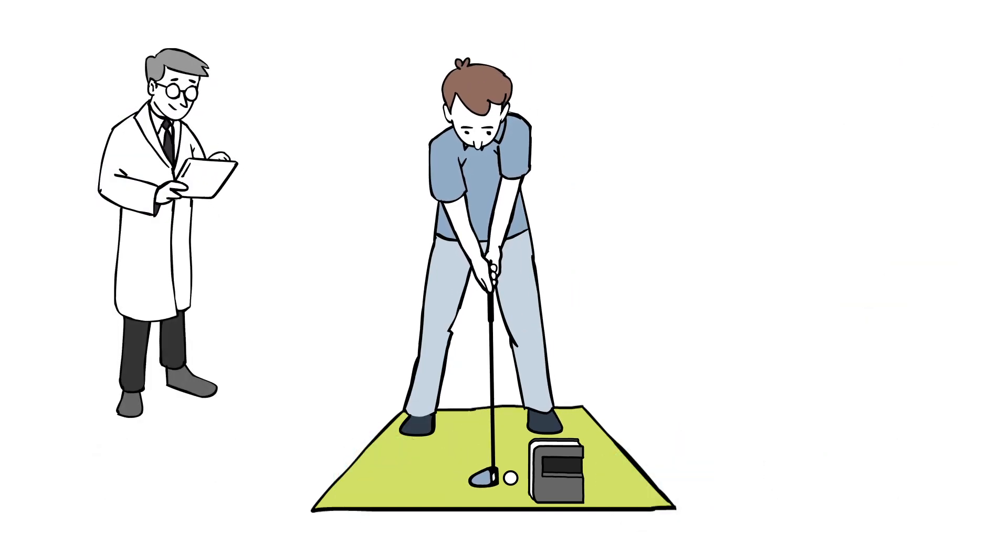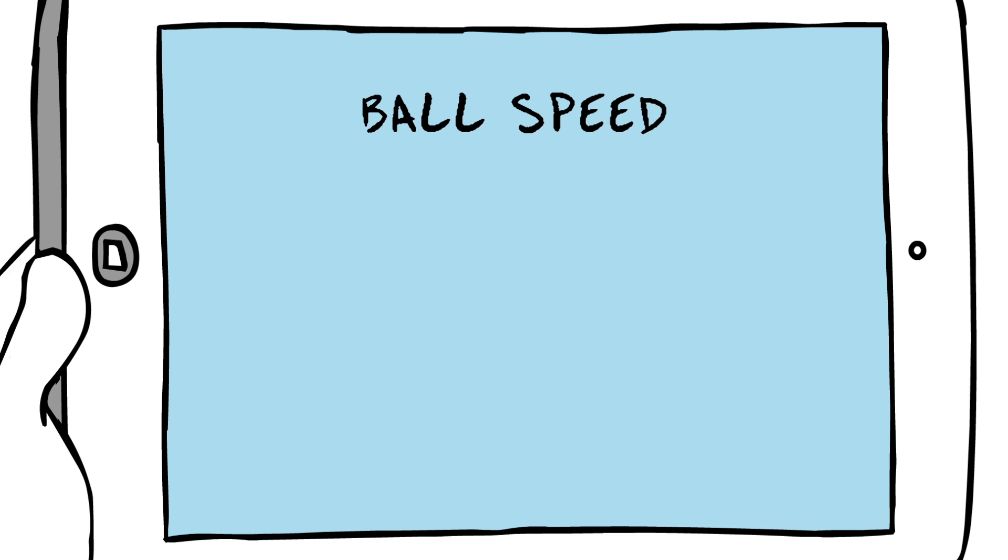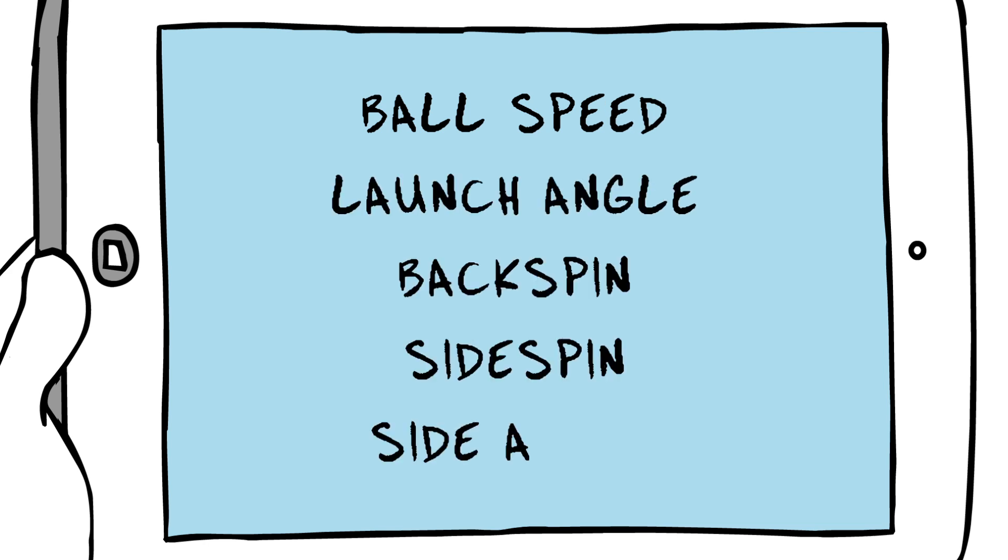With SkyTrack's accurate and reliable golf ball measurements, the following data parameters are captured for every shot: ball speed, launch angle, backspin, sidespin, and side angle.